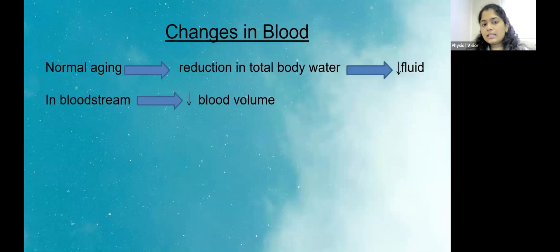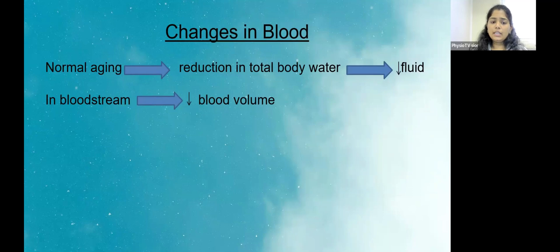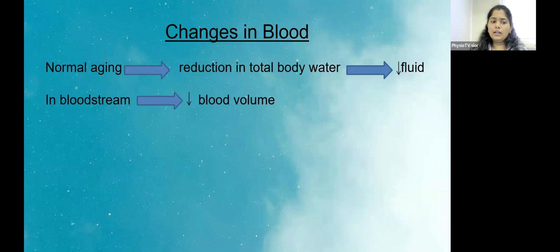Changes occurring in blood: along with normal aging, there is a reduction in total body water, causing hypovolemia — reduced fluid in the bloodstream. This is why elderly are more prone to dehydration and feeling giddy, further reducing their aerobic capacity. Whenever an elderly person is exercising, we need to focus on all these concurrent changes and plan a treatment protocol accordingly. We need to constantly remind the elderly to drink water.